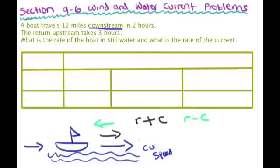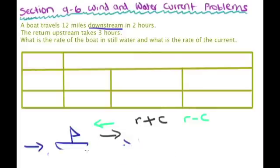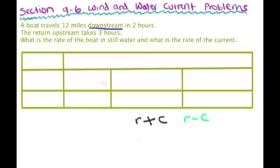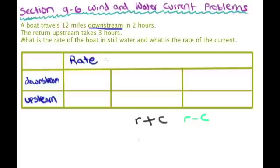I'm going to erase this diagram, but I'm going to keep these two expressions — r plus c and r minus c — because in just a second we'll be using those. Okay, let's go back to this. We have a table, so as usual we're going to use it. Let's put downstream and upstream as our two rows, and we have our formula up here: rate times time is equal to distance.